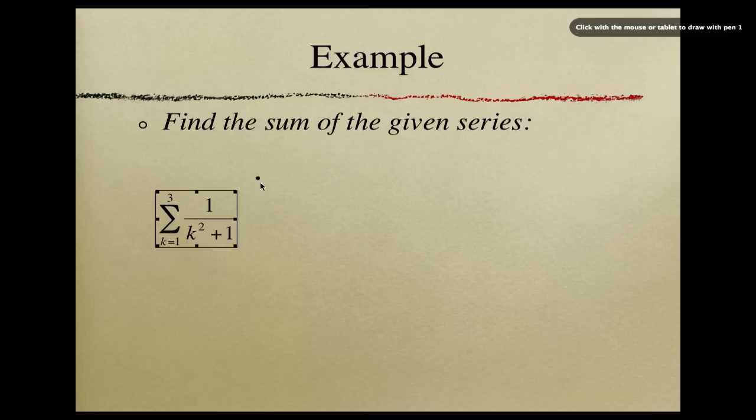So we have, and excuse the boxes here, I couldn't get rid of those for some reason, but we have a summation, or we have a series, and we want to find the sum of the given series. So what we see here is this gives us the 1 over k squared plus 1, so this information right here, that gives us the terms of our sequence. And what these numbers and letters here mean is this is what I want it from. So I want from k equals 1 to 3. So I want the first three terms of this series, and I'm going to add them together. So that's what all of that means. I'm going to clear that off there. So we're going to start with k equals 1.